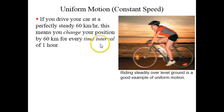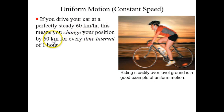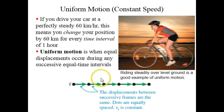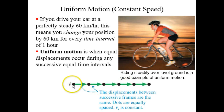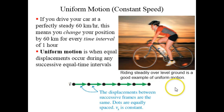Uniform motion is motion that has a constant speed. So if you're driving your car at a perfectly steady 60 kilometers per hour, you change your position by 60 kilometers for every time interval of one hour — equal displacements over any successive equal time intervals. On a motion diagram, all the dots are the same distance apart. An example would be riding your bike over level ground without speeding up or slowing down.